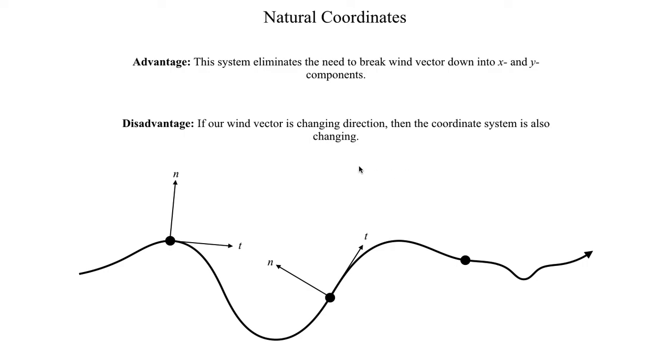So that's what we mean by if the wind vector is changing direction, that means the coordinate system is also changing direction. And at this point, the t-axis is going to be pointing in a different direction. So every point along this trajectory, the axis that we're working with is going to be changing. And that's one of the complications that arises when we're dealing with natural coordinates.